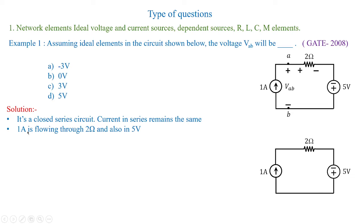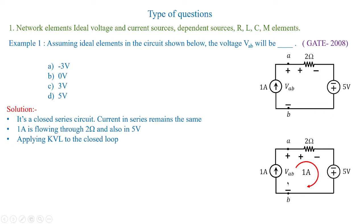Taking the circuit as it is, since the 1-ampere source is in the series network it flows through 2 ohms and 5 volts. Applying KVL to the closed loop: minus VAB plus 2 times 1 ampere, which is the drop across 2 ohms, minus 5 equals 0. Therefore VAB equals minus 3 volts. Option A is the correct answer.